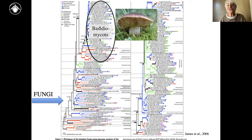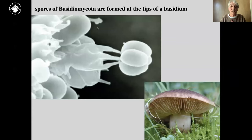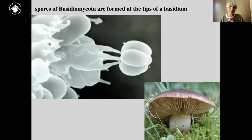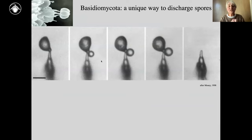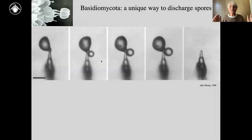Here we have a basidium sticking out into the space between the gills. It has four prongs, and each prong forms a spore. Four is the norm — but of course it's fungi, so there are all kinds of exceptions. They can have one, two, six, or eight, but four is very normal. And these spores are shot off in a way that is unique — there's no other group of organisms that does anything similar to this.